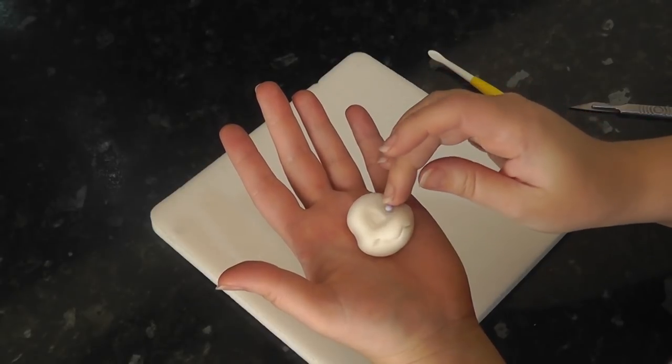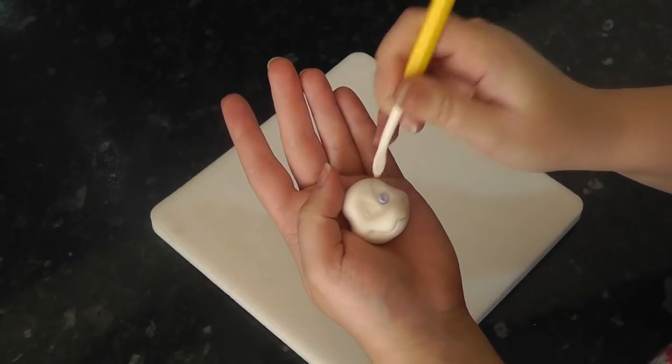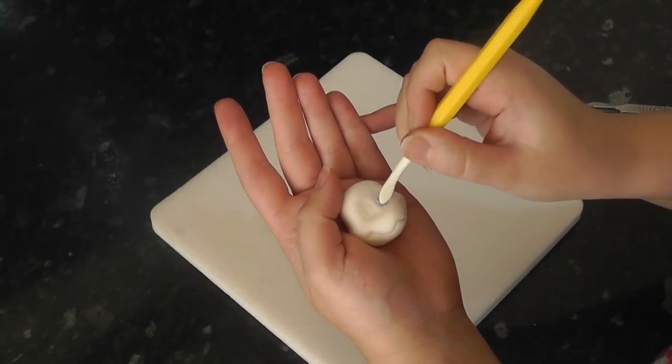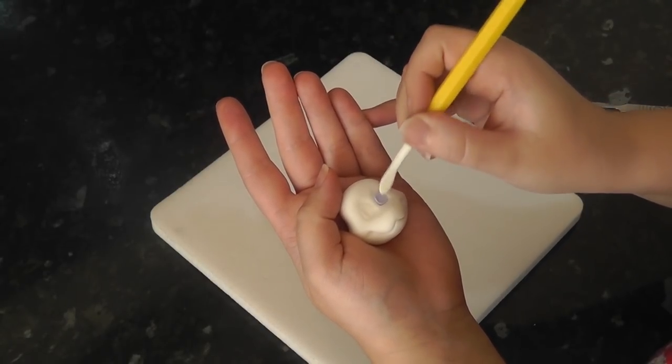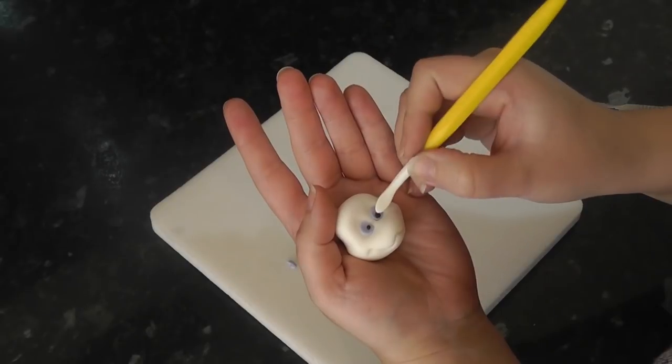Add in small balls of bluey purple paste and flatten them to the inner bottom corners. Then add smaller balls of black paste and do the same.